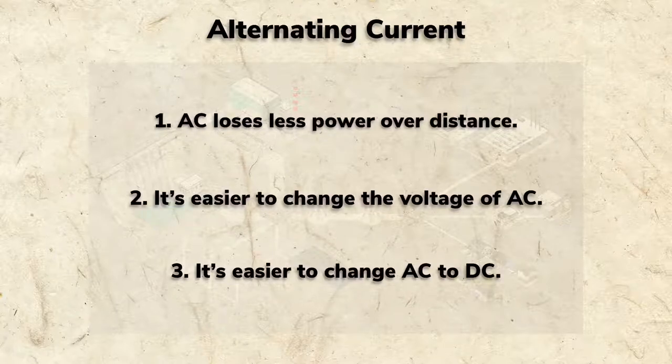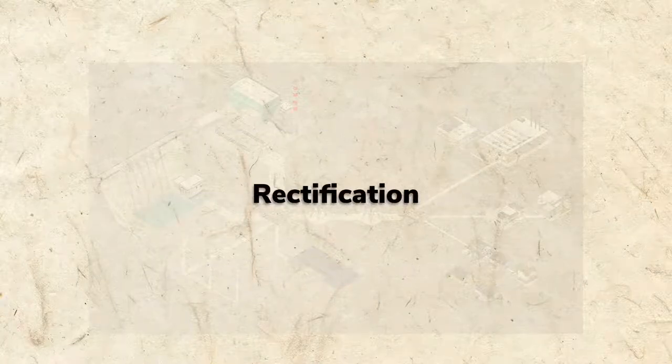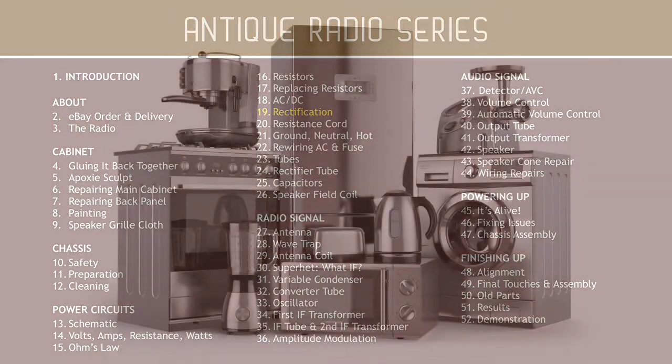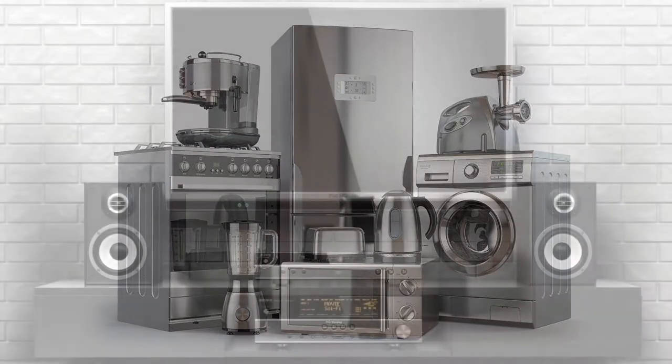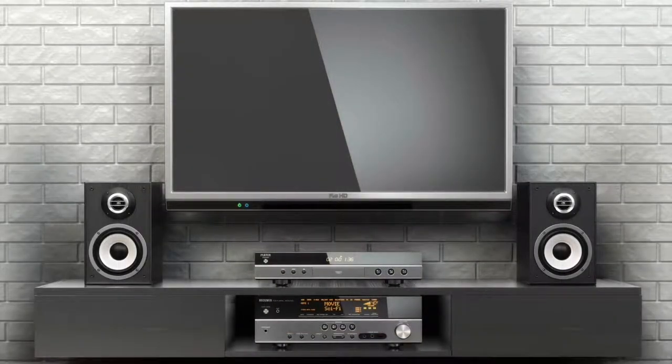Converting alternating current to direct current is called rectification. Many appliances in your home work best with alternating current. Electronics like our radio, however, require direct current.